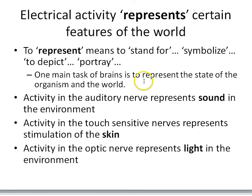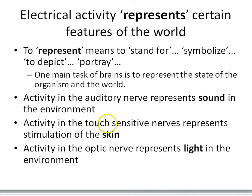One of the main tasks of brains is to represent the state of the organism and the world. Activity in the auditory nerve is going to be representing sound in the environment — vibrations of air in the environment. Activity in the touch-sensitive nerves will represent stimulation on the skin, and activity in the optic nerve will represent light in the environment. The different sensory pathways are representing different aspects of the environment.